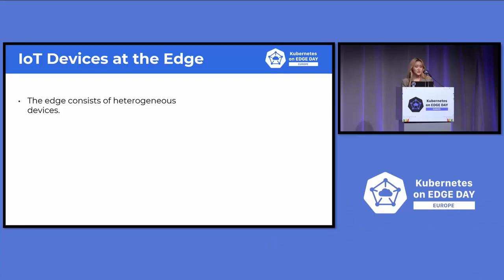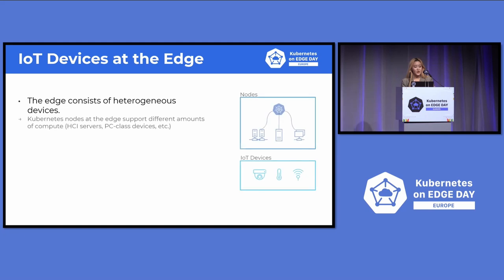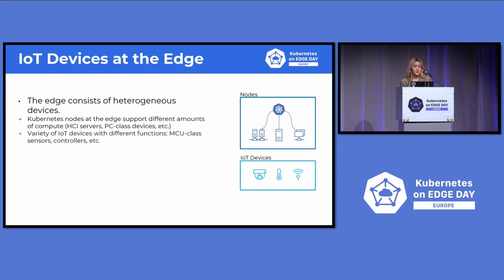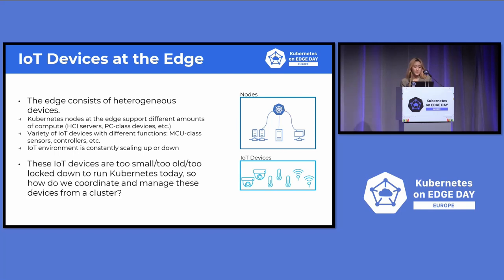At the Edge, there is a heterogeneous ecosystem of devices. They all have different amounts of compute, so you may have servers, PCs, as well as IoT devices that can act as controllers, sensors, and more. This IoT environment is constantly scaling up or down with devices, and they often depend on network availability. Since these IoT devices are too small, too old, and too locked down to run Kubernetes on themselves, how can we manage and coordinate these from a cluster?